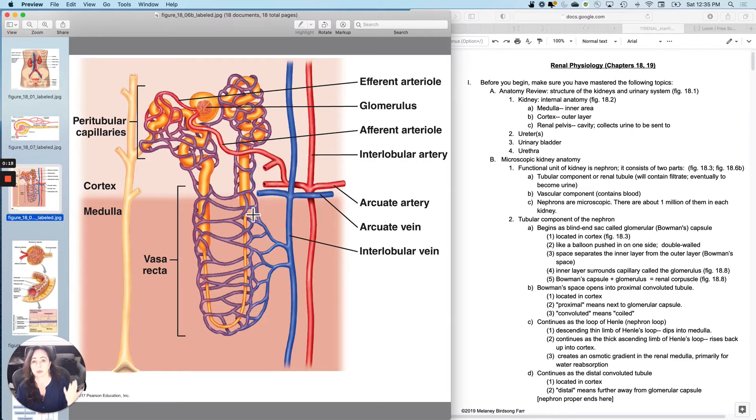You need to remember all of the microscopic anatomy. You need to know proximal convoluted tubule, loop, distal convoluted tubule, ascending limb, descending limb, ascending limb, collecting duct. You need to know all of that.